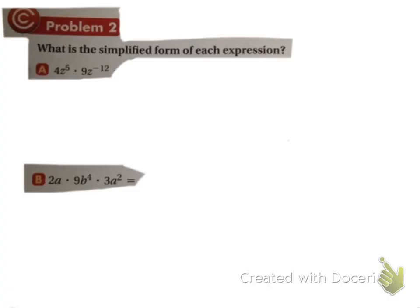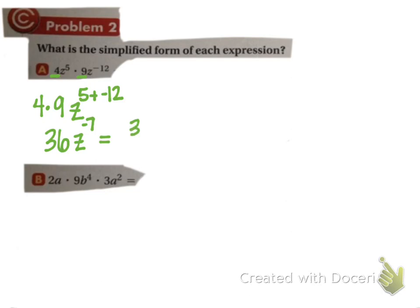Let's try example two — this is when we throw some variables in. This comes straight out of the book: four z to the fifth power times nine z to the negative twelve. Only z gets the exponent — if four went with it we'd have parentheses. So four times nine is 36, and z to the five plus negative twelve gives 36 z to the negative seventh. Negative exponents push the variable down to the denominator, so it's 36 over z to the seventh.